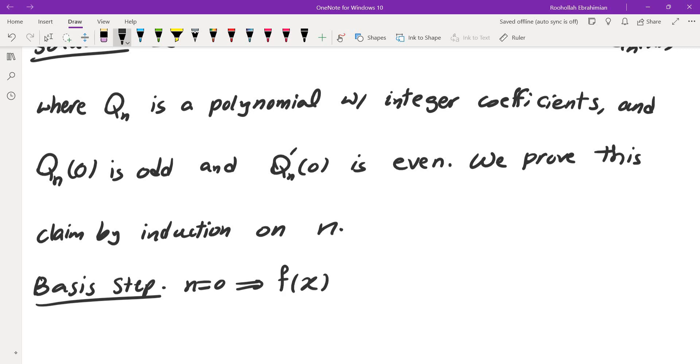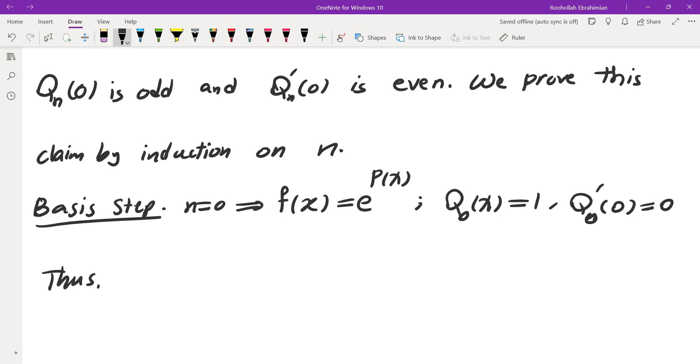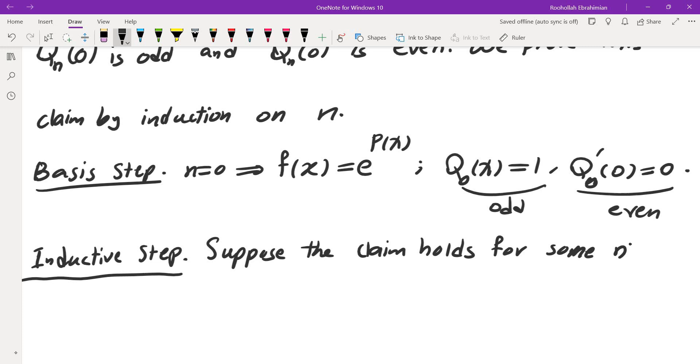f(x) = e^(P(x)), so Q₀(x) = 1. Q₀(0) is 1, Q'₀(x) is just 0. Thus this proves the basis step because Q₀(0) is odd and Q'₀(0) is even. Now let's look at the inductive step. Suppose the claim holds for some n ≥ 0.